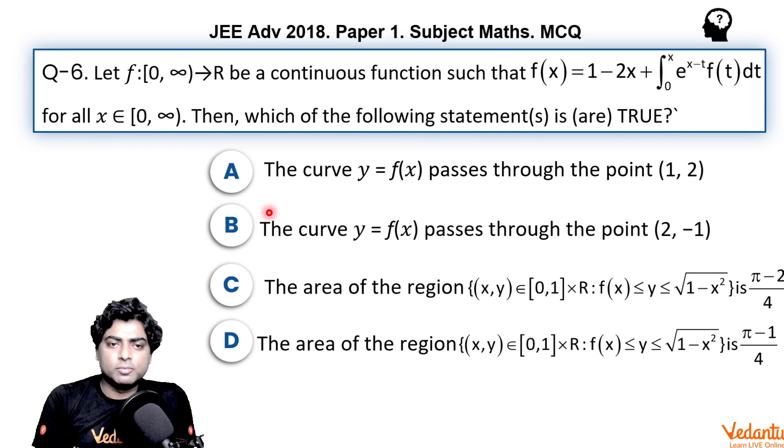Option C: the area of the region consisting of points (x, y) where x is from [0, 1], y is a real number, and y is more than or equal to f(x) and less than or equal to sqrt(1 - x^2), is (π - 2)/4.